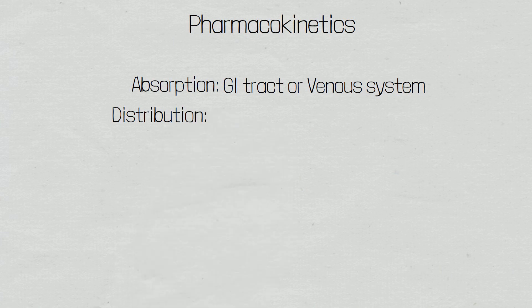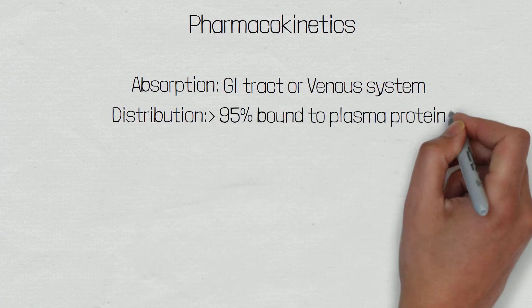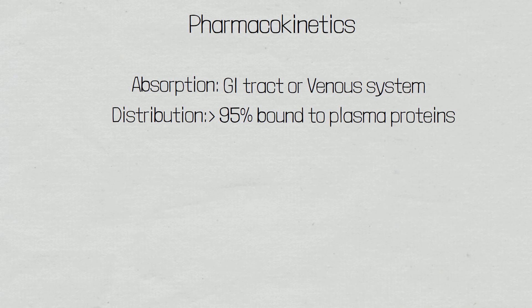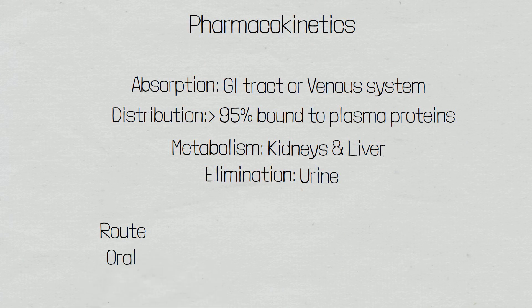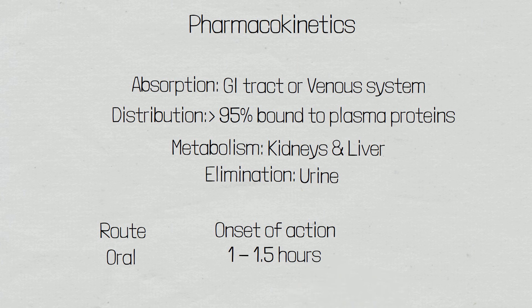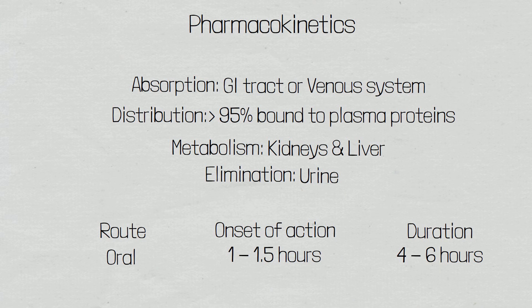In healthy individuals, greater than 95% of feruzamide is bound to plasma proteins such as albumin. Only 2-4% of feruzamide is existent in an unbound form. The metabolism of feruzamide occurs mainly in the kidneys and the liver. The kidneys are responsible for about 85% of total feruzamide clearance and elimination is via the urine. Following oral administration, the onset of action is approximately 1 to 1.5 hours and the peak effect is reached within the first 2 hours. The duration of effect following oral administration is about 4 to 6 hours, but may last up to 8 hours, which is why oral feruzamide is usually taken in the morning to prevent increased urination throughout the night.